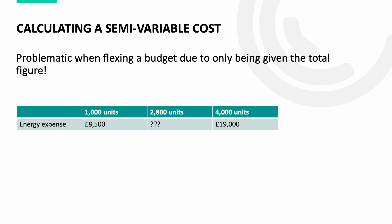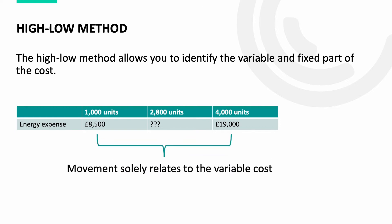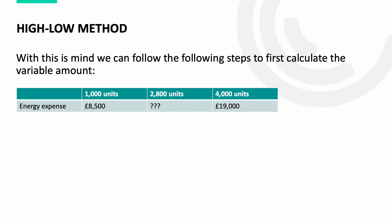We now need a method to calculate what the cost would be for 2,800 units. The high-low method allows us to calculate a semi-variable cost by identifying the variable cost per unit and then using this to identify the amount of the fixed element. The movement in cost between the two sets of units is down to the variable cost, as this is the part that increases when the number of units increases.